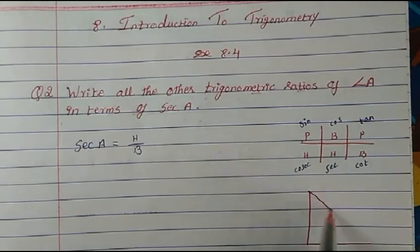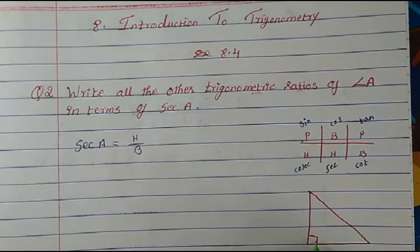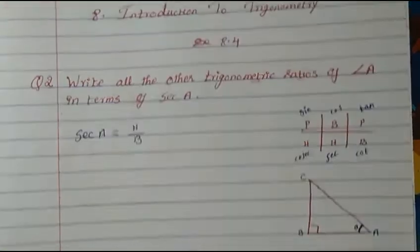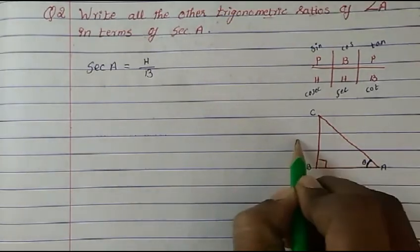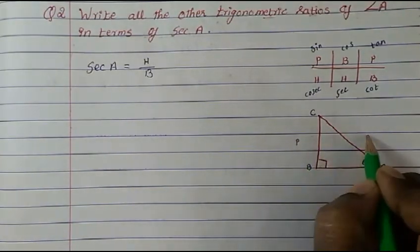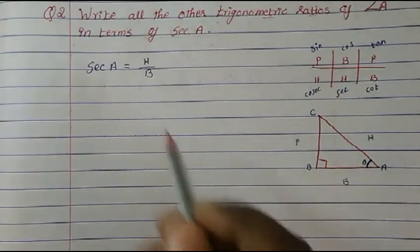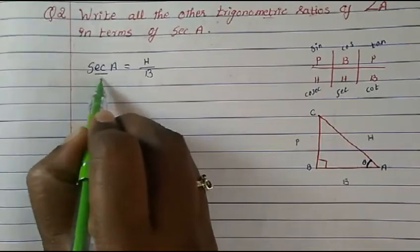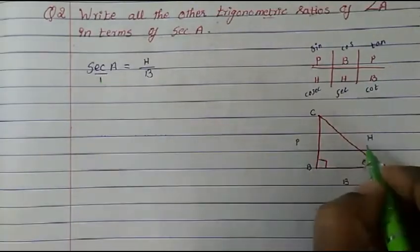This is our right angle triangle. Since it is angle A, we keep angle A as the acute angle — that is theta. Vertices are A, B, and C. Opposite to theta is the perpendicular, opposite to 90° is hypotenuse, and this becomes the base. Since hypotenuse upon base is sec, with nothing in the denominator we consider it as 1.